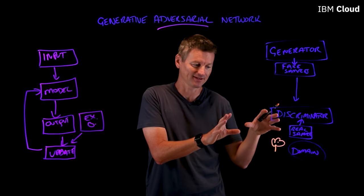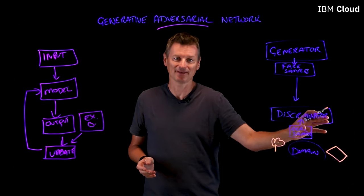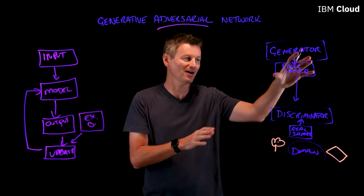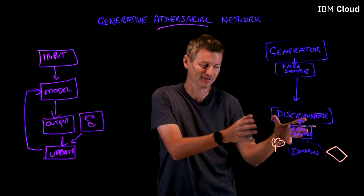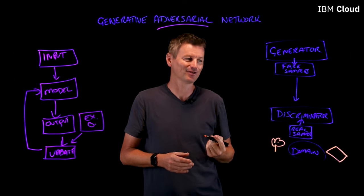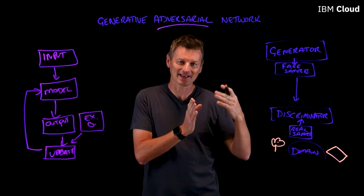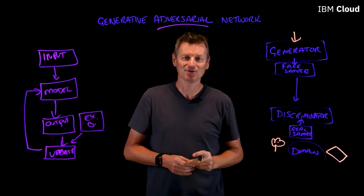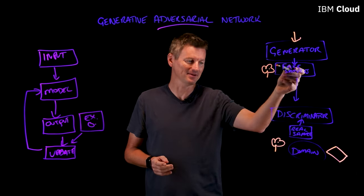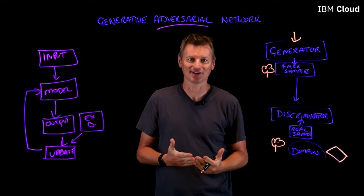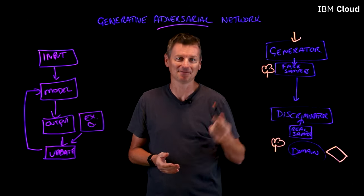When our Discriminator gets good at recognizing real flowers, we'll feed in some shapes that are not flowers at all and make sure it can discriminate those as not flowers. During this whole time, our Generator was frozen — it wasn't doing anything. But when our Discriminator gets good enough, we apply our Generator to start creating fake versions. The Generator takes a random input vector and uses that to create its own fake flower. This fake flower image is sent to the Discriminator, which now has a decision to make: is that image a real flower from the domain, or is it a fake from the Generator?